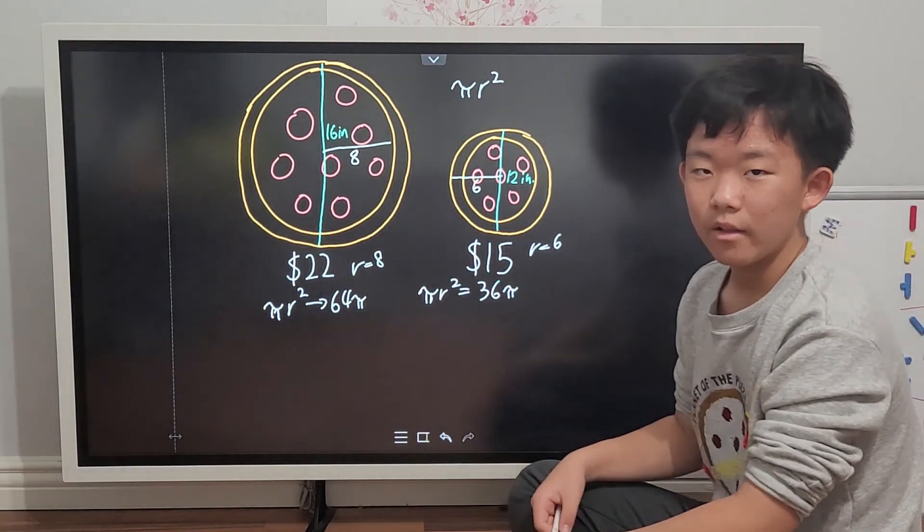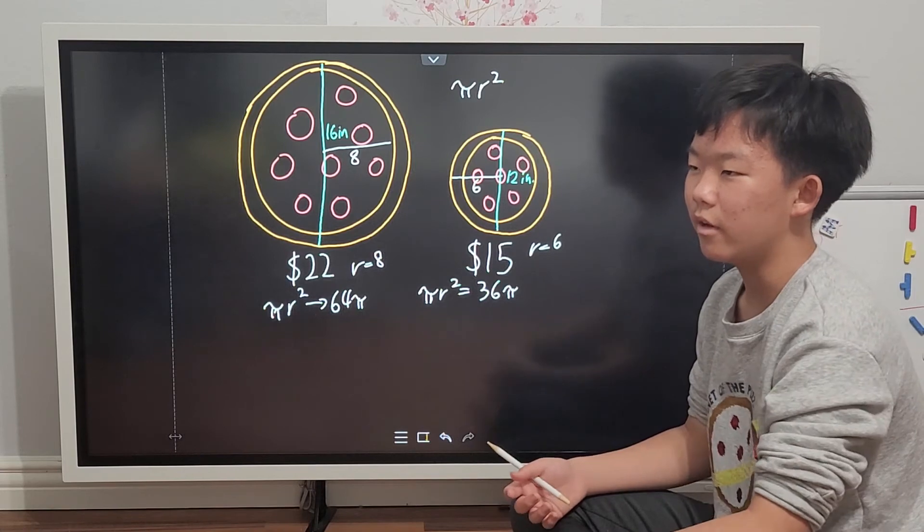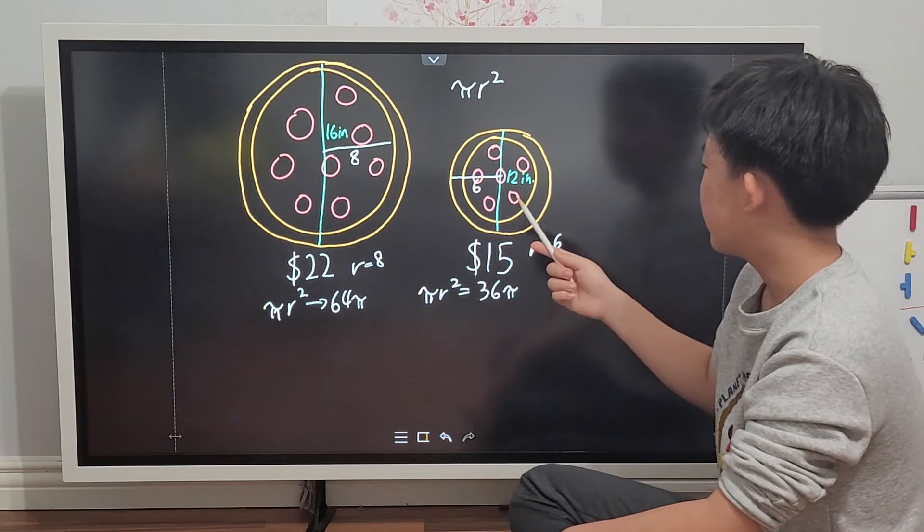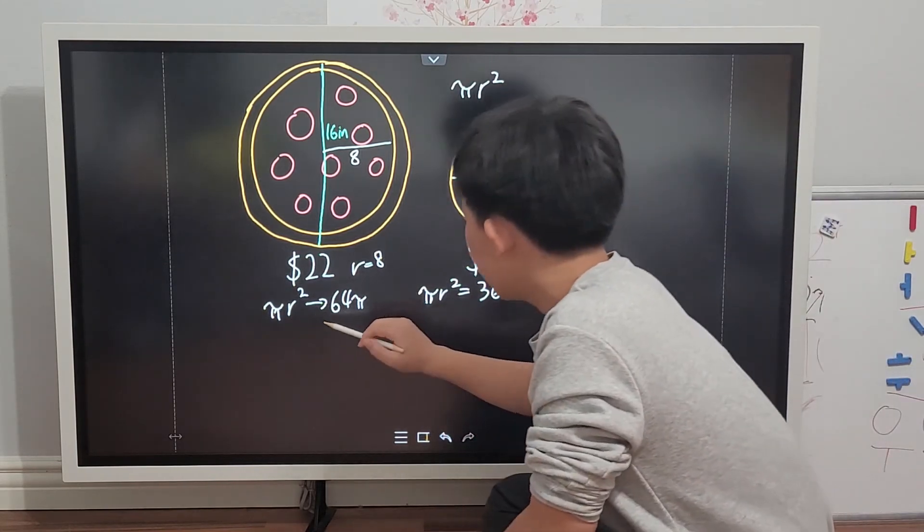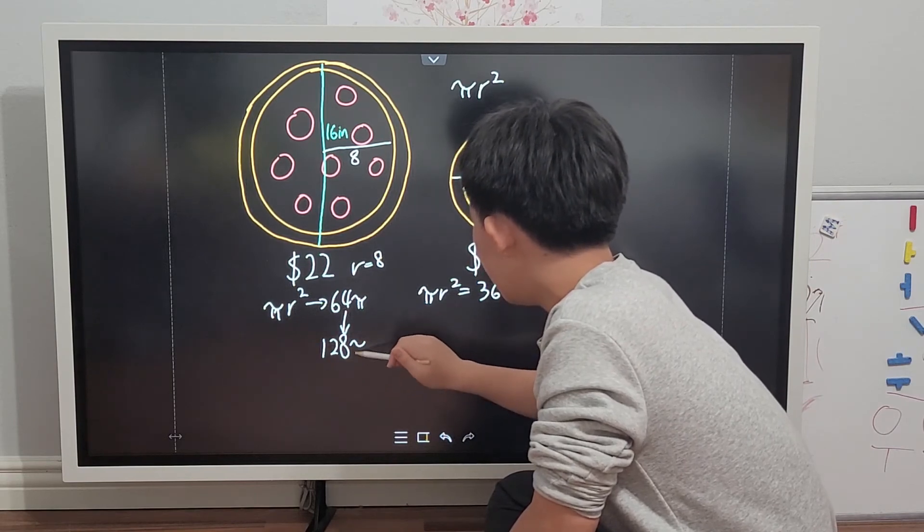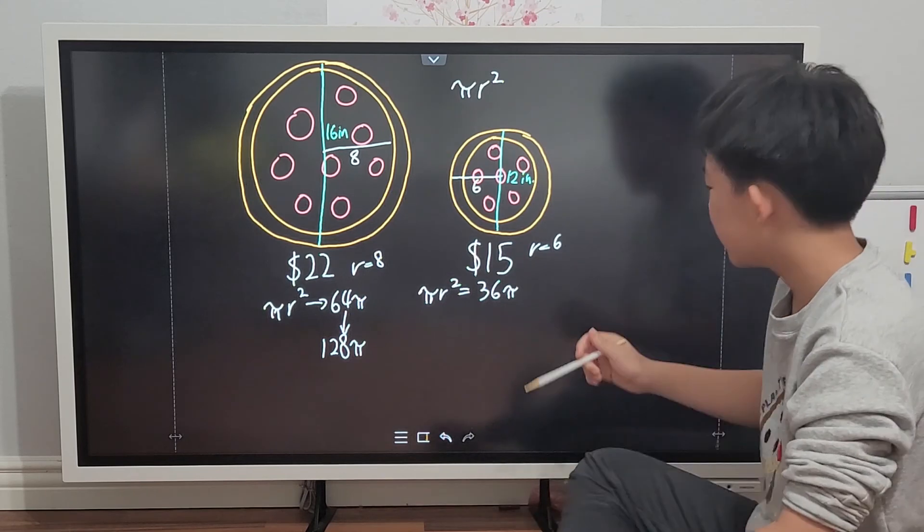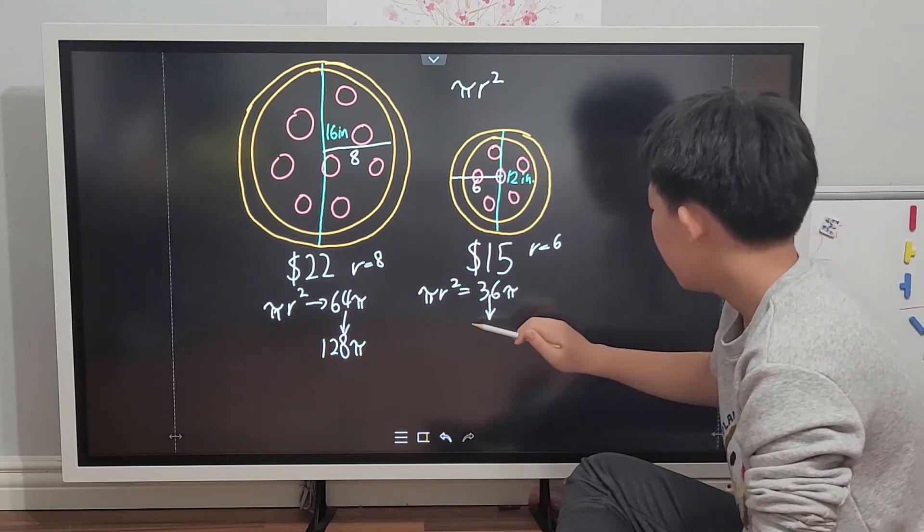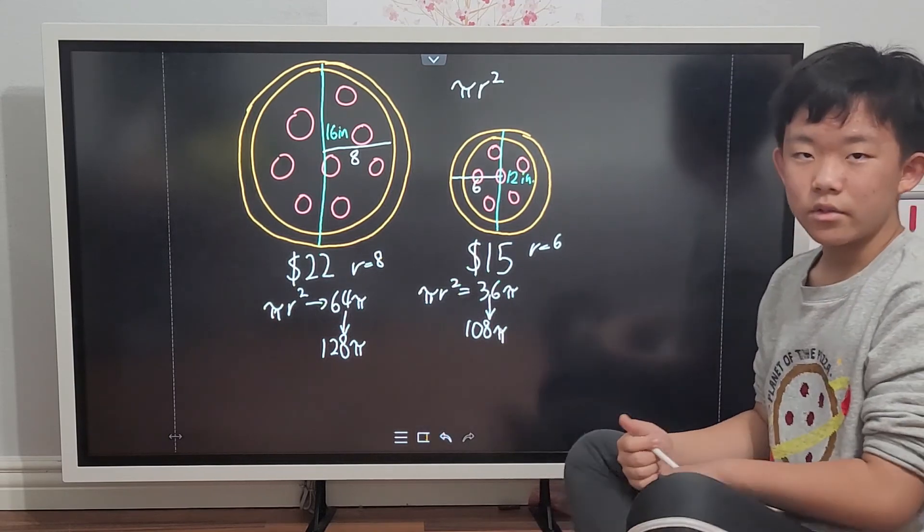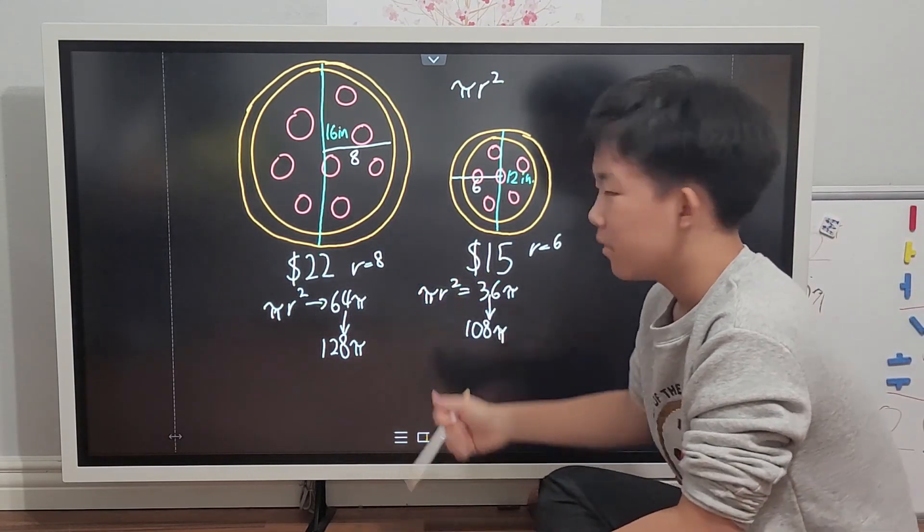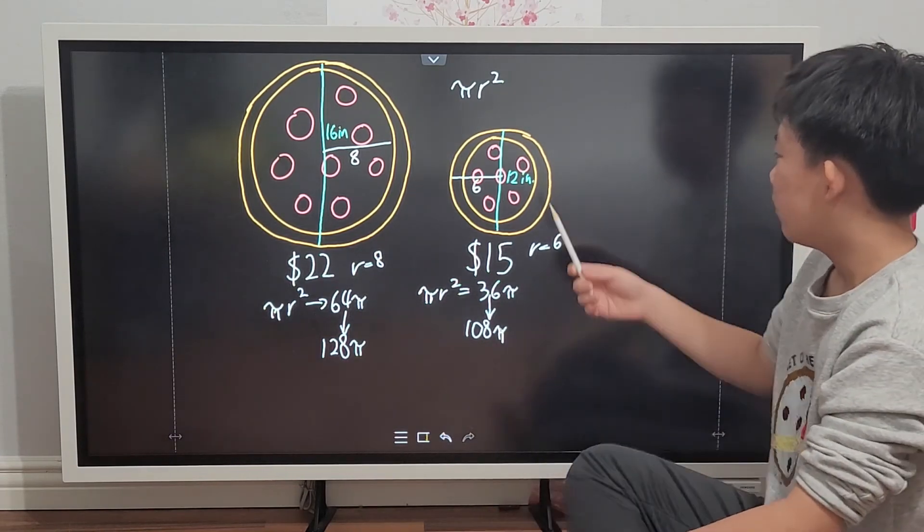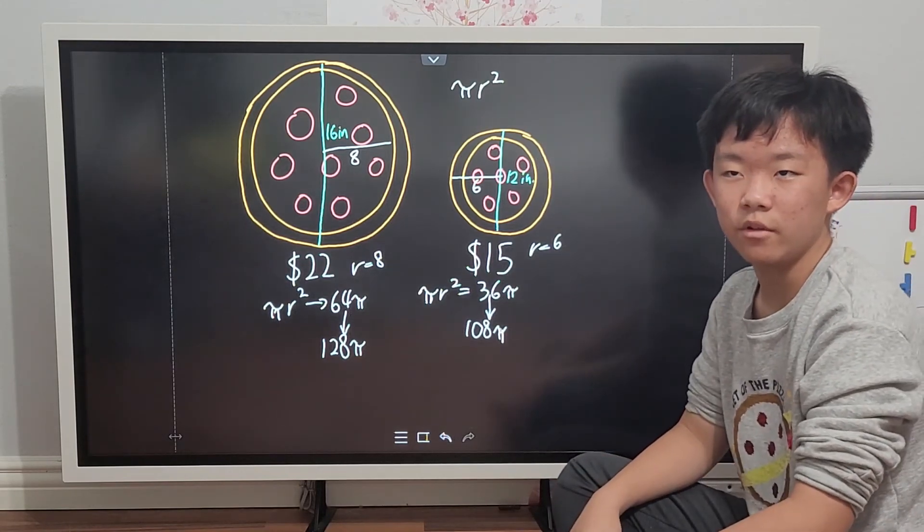But because we're doing 2 of this and 3 of the smaller one, we're going to have to multiply. If you multiply 64π by 2, you get 128π. But if you multiply 36π by 3, you only get 108π. Also, if you do 2 times 22, you get left with 44 dollars you need to pay. But if you get 3 of the medium pizzas, your bill will be 45 dollars.